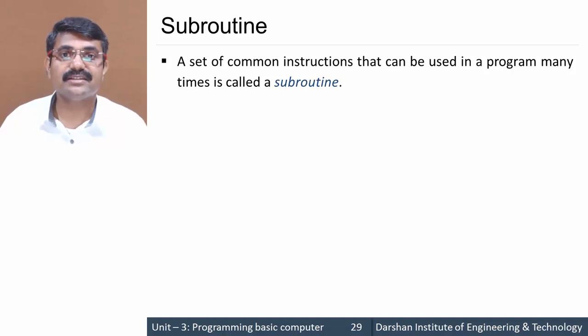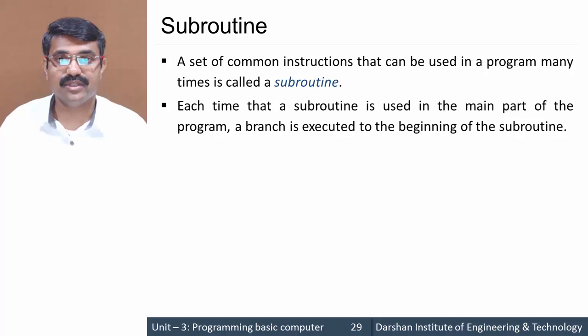If we have a set of code that will be called many times in a single program, instead of writing it repeatedly, we write it as one separate piece of code and call it every time we need it. That is a subroutine - a set of common instructions that can be used in a program many times.